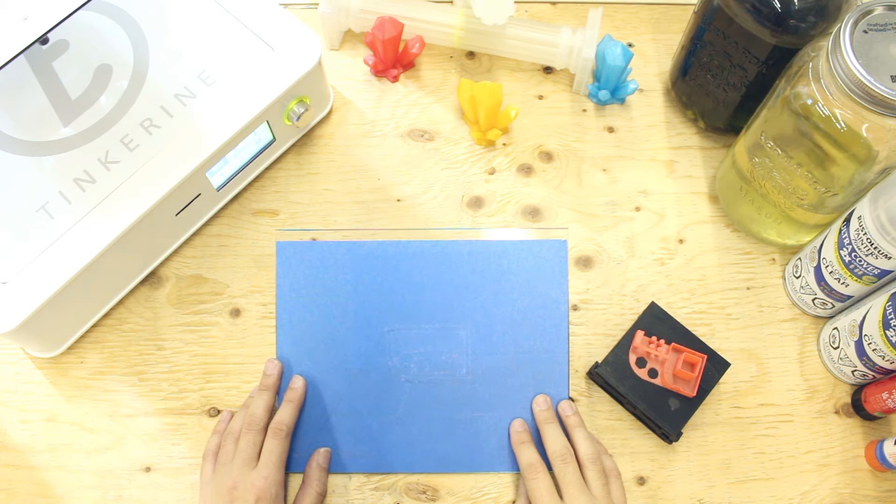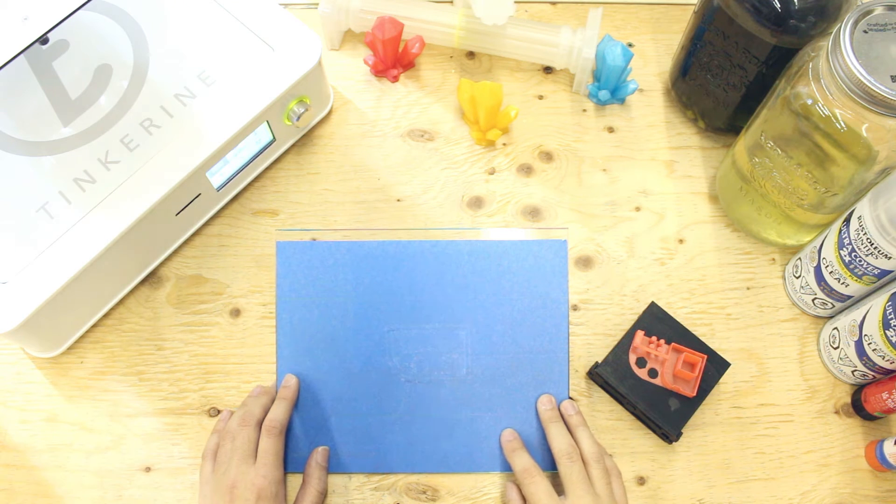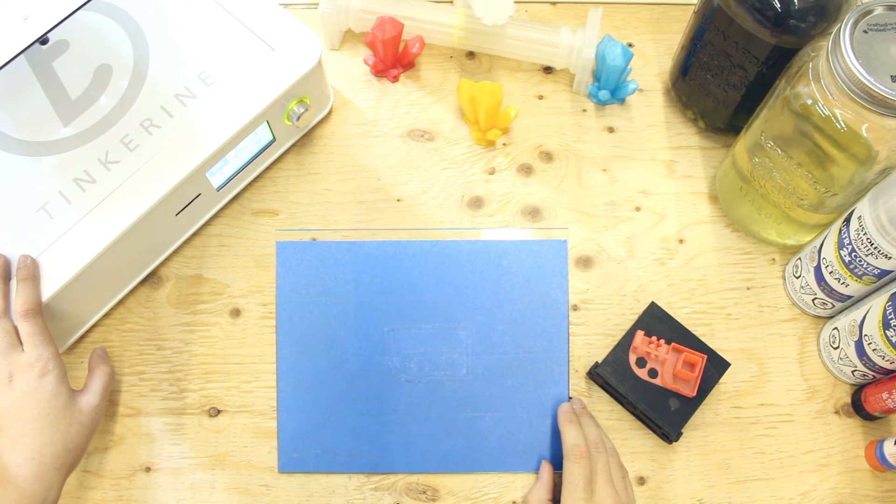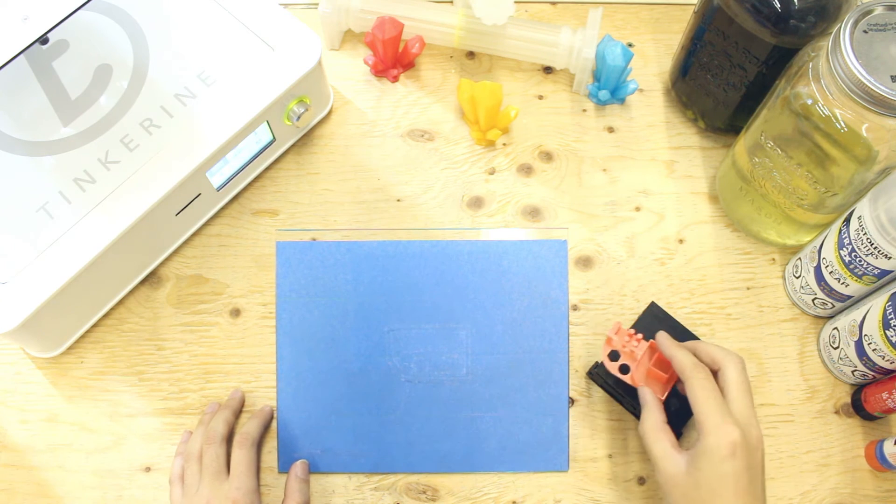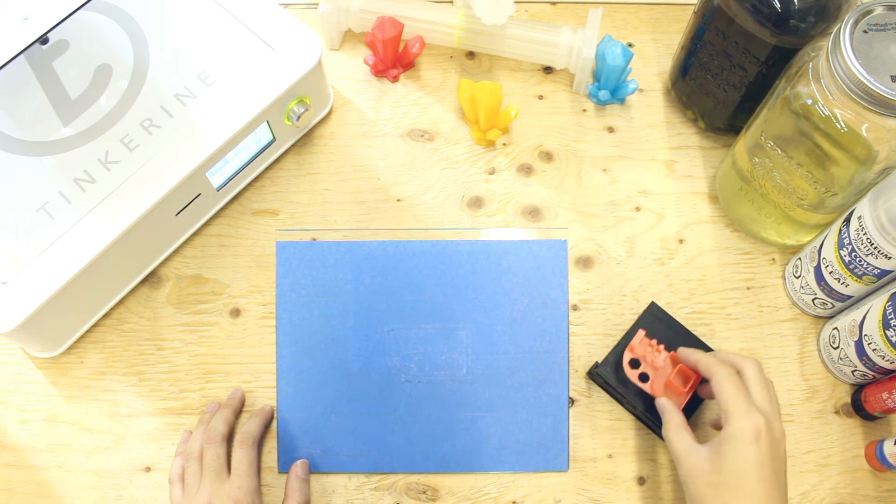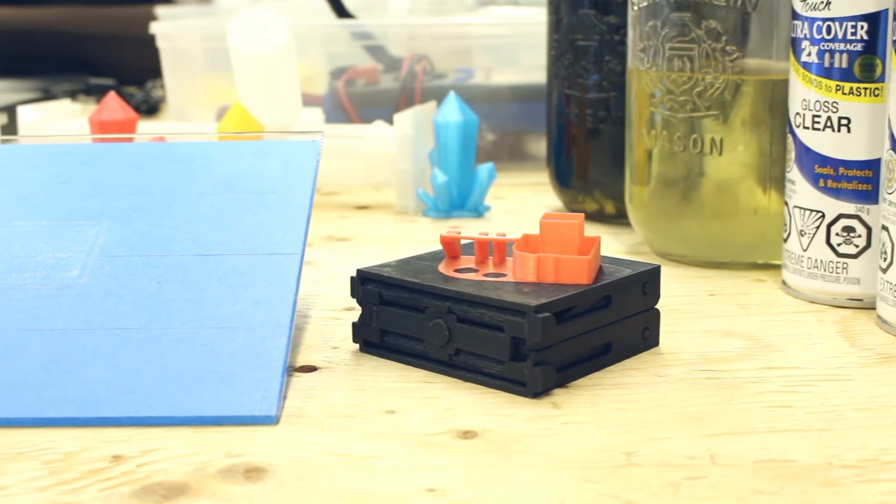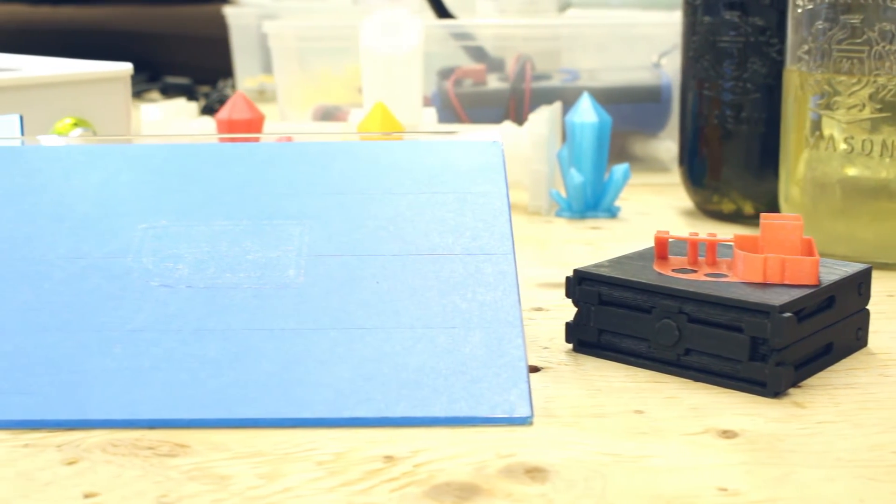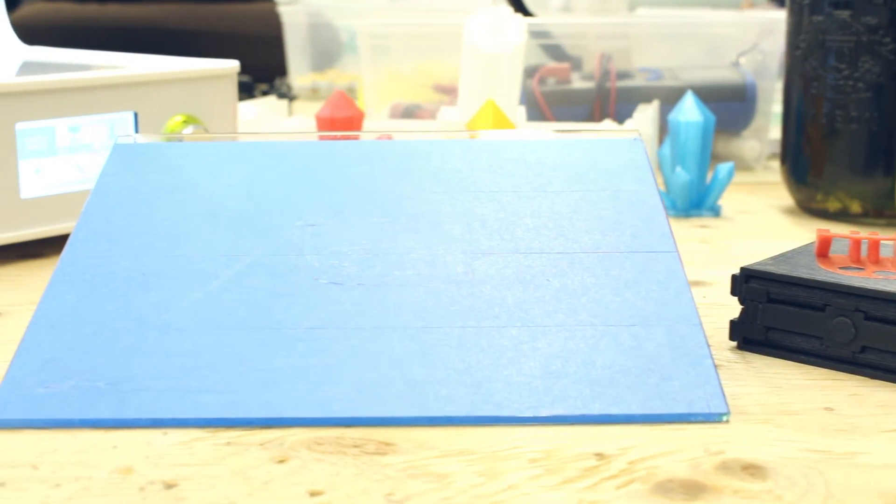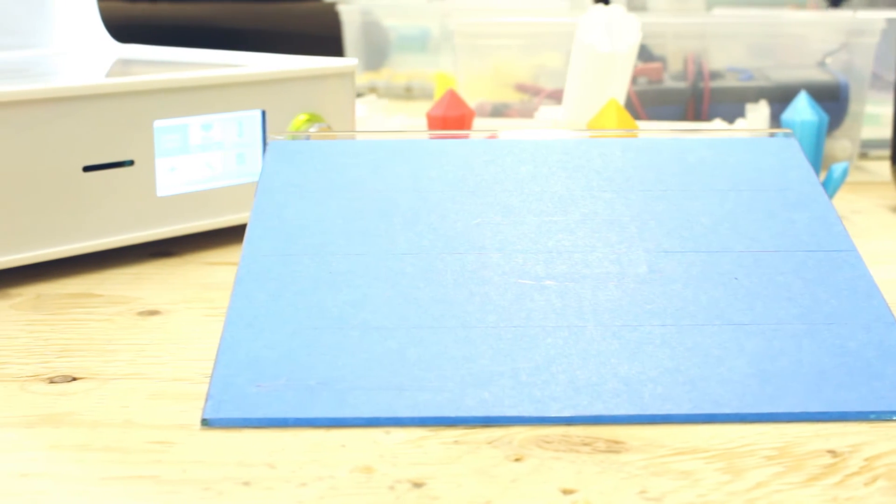Well, there we have it. We tried printing upside down and it works. The print came out just like how it would come out from a normal orientation. That's the end of our experiment today. Remember to subscribe below and comment on what experiment you would like to see in the future. Thank you for watching. Tinker out.